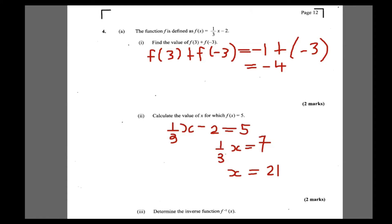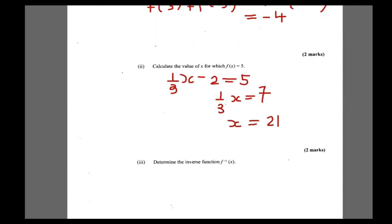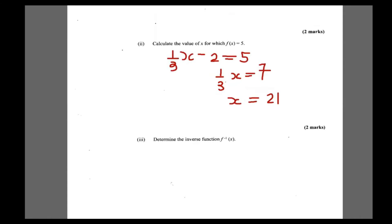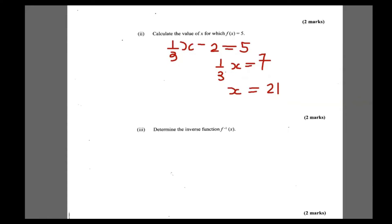Nice and easy — x is 21. Now it says determine the inverse of the function. To find the inverse, the first step is to interchange x and y. So rewrite the function as x = 1 over (3y). I'll write it as f⁻¹: x = 1 over (3·f⁻¹ - 2).